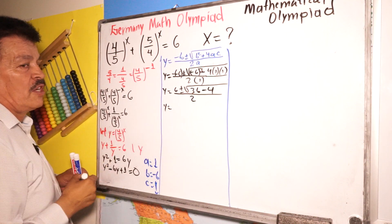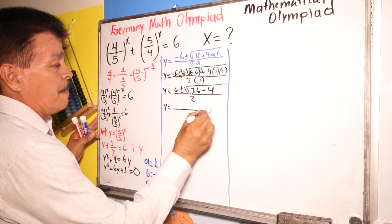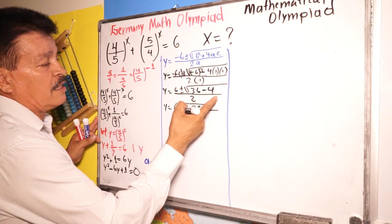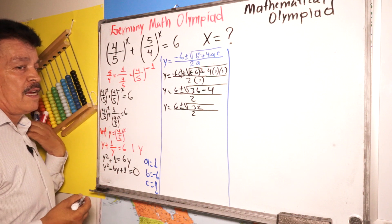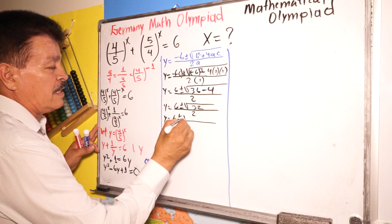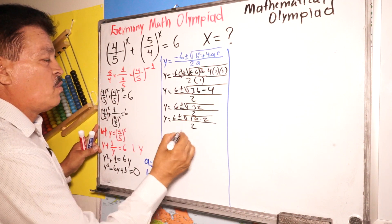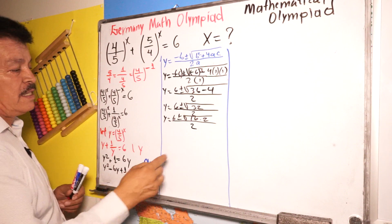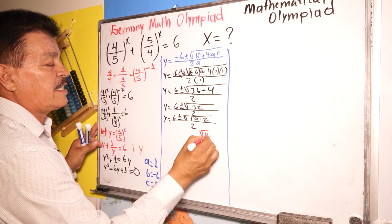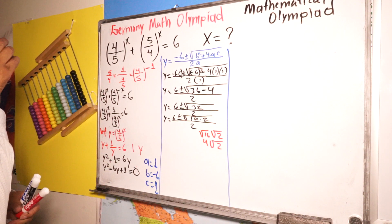Keep simplifying. We have six plus or minus the square root of 32, divided by two. Now 32 equals 16 times 2, so the square root of 32 equals square root of 16 times square root of 2, which equals four square root two. So we have six plus or minus four square root two, divided by two.